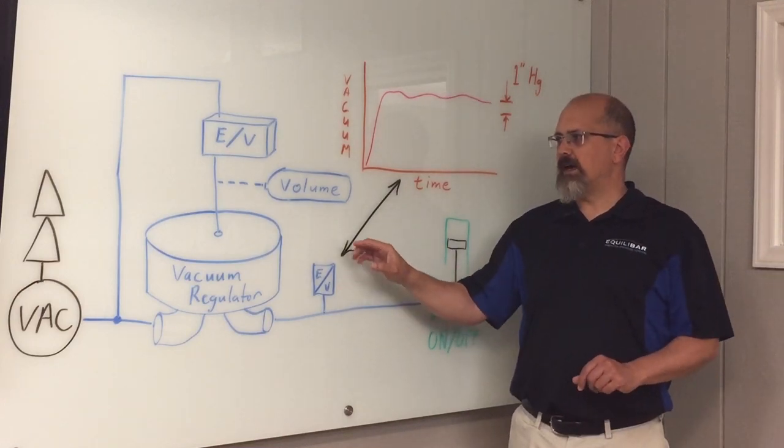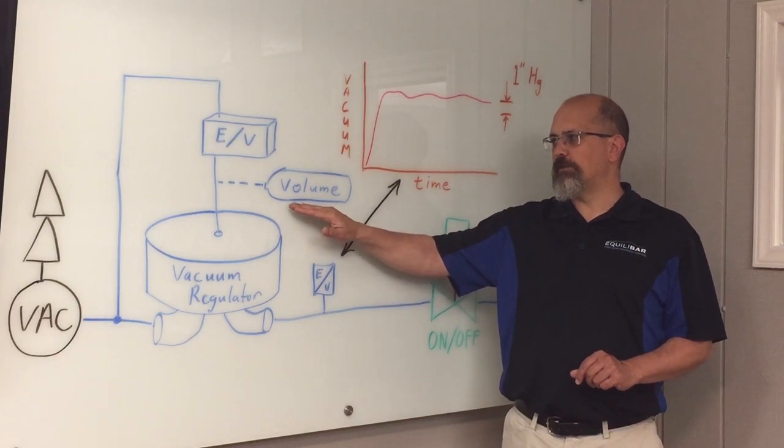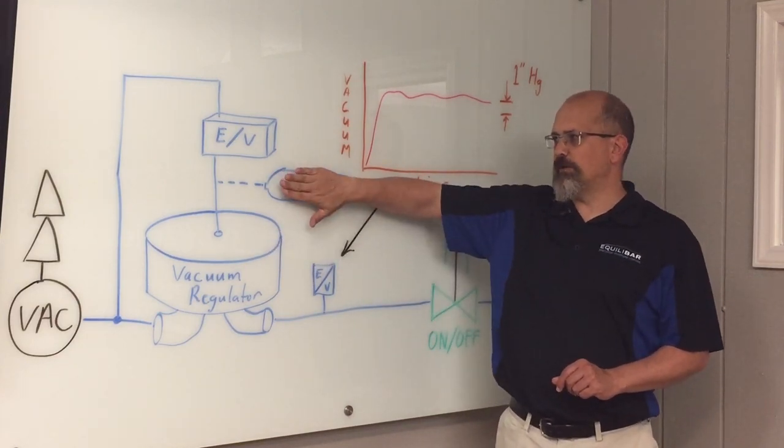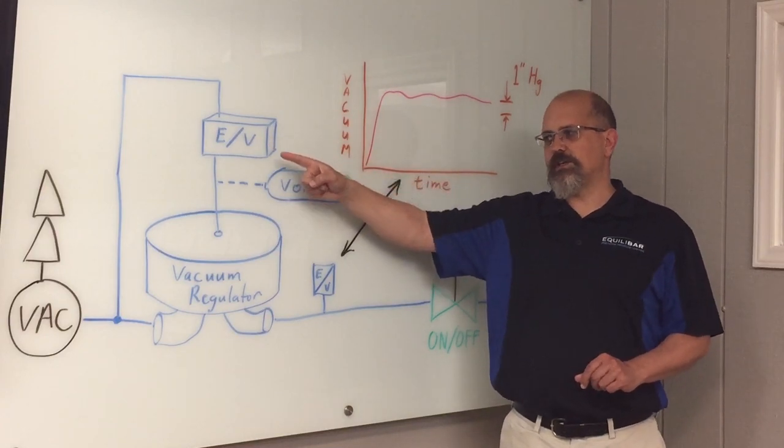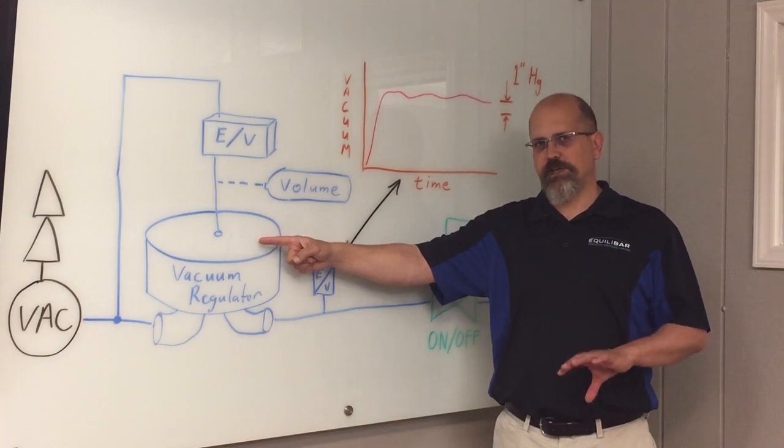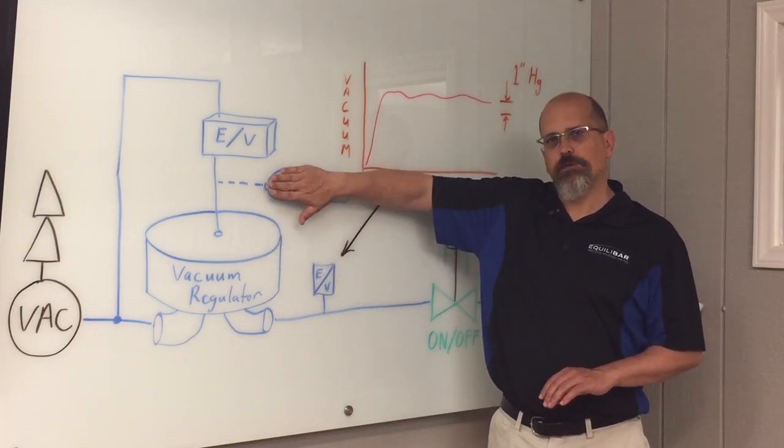One thing we're going to do in the lab is we're going to toggle a volume in and out of the pilot. So with no volume, the electronic regulator is able to change the pilot signal very quickly. So if you need to change the vacuum setpoint quickly, we'd go with no volume.